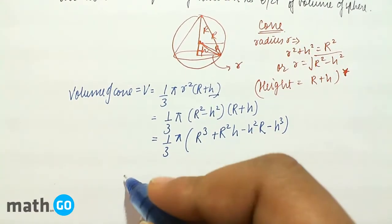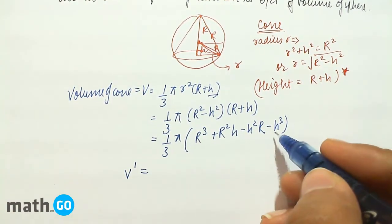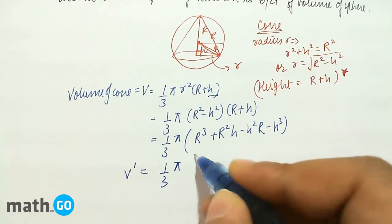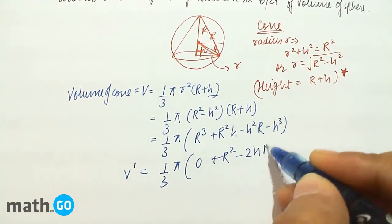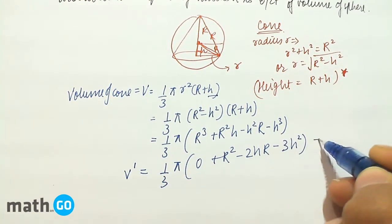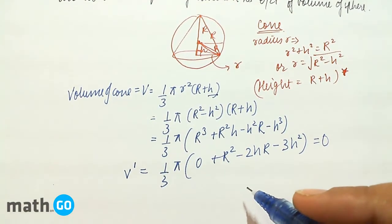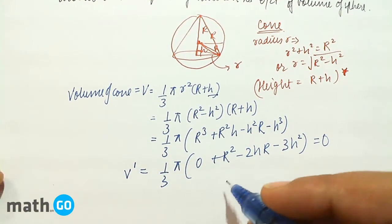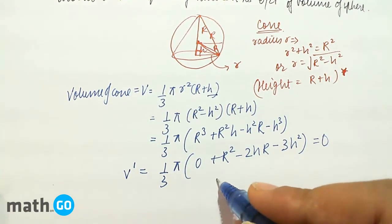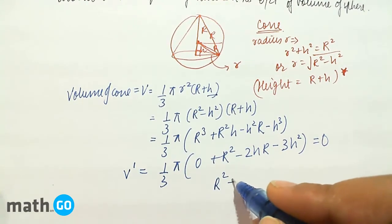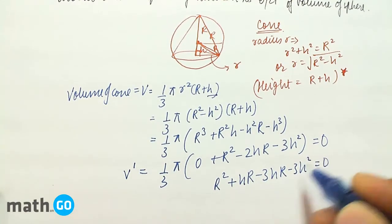So to find the maximum, we find its derivative. We find the point of maxima. So it will be 1/3 π times 0 + R² - 2hR - 3h², keeping this equal to 0 for the critical point. Simple middle term splitting. So it will give R² + hR - 3hR - 3h² equals to 0.